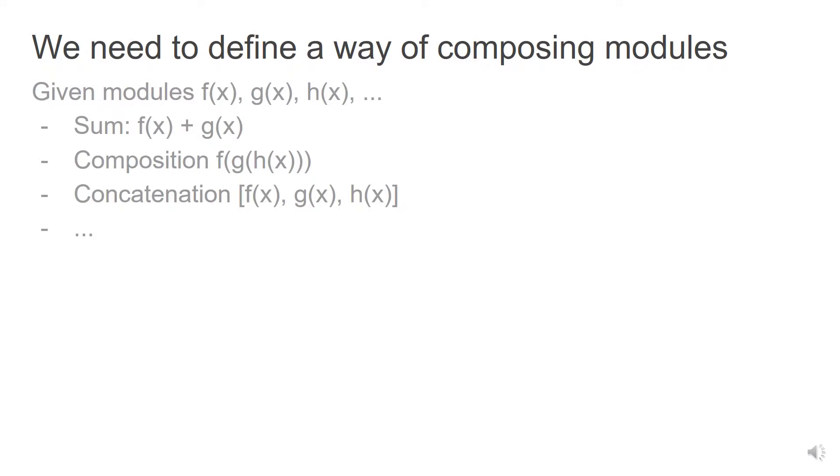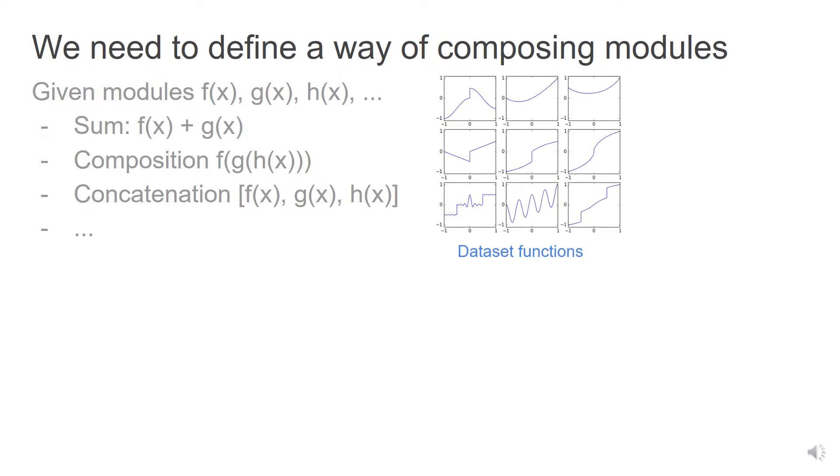In our approach, we define module composition rules, similar to specifying neural network architectures. For instance, given a set of datasets generated by adding two unknown functions, you can select a module composition that picks two modules and adds their outputs.